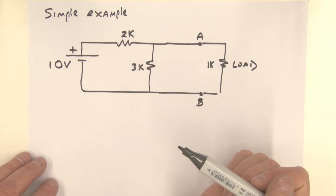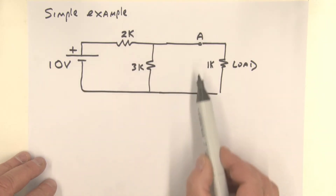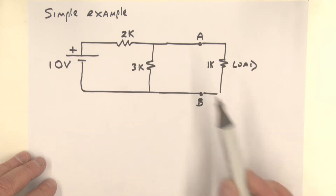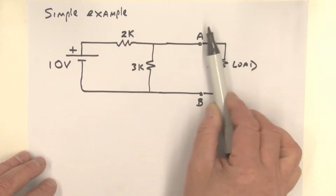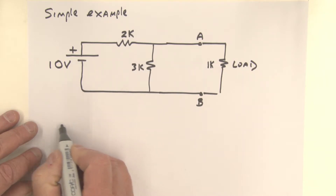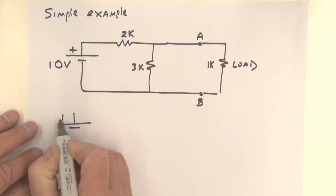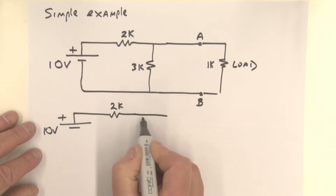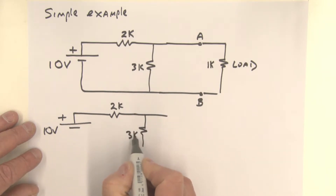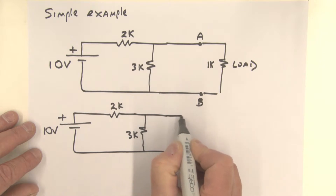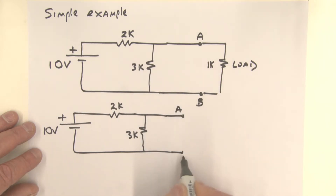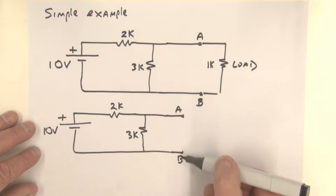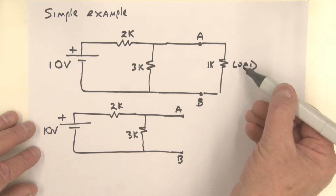Here's a simple example. We want to Thevenize part of the circuit, calling this the load, with terminals A and B. The first step is to always remove the load and redraw the circuit. What we have then is a 10-volt source, a 2K resistor, and a 3K resistor, with terminals A and B representing our two terminal points. The Thevenin voltage is the open circuit voltage — the voltage measured at terminals A and B with the load removed.